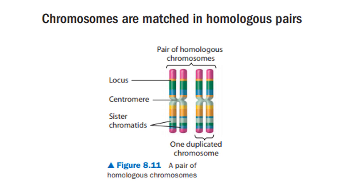For example, if a gene that determines whether a person has a freckle is located at a particular locus, or place, on one chromosome — within a narrow orange band in the drawing, for instance — then the homologous chromosome has that same gene at the same locus. However, the two chromosomes of a homologous pair may have different versions of the same gene.